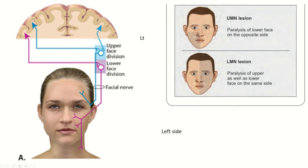So this is the motor cortex and this is the nuclei of the facial nerve — this is the corticobulbar tract. You can see the nuclei is divided into an upper part and a lower part. The neurons of the upper part of the nuclei are controlled by both cerebral cortices, meaning both motor cortices control the upper part. But the lower part of the nuclei contains neurons which are only controlled by the opposite motor area.